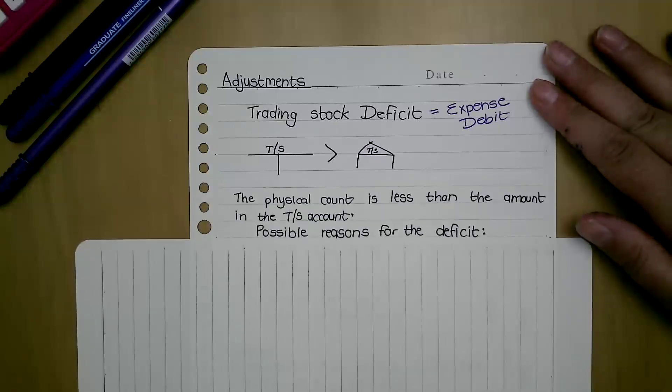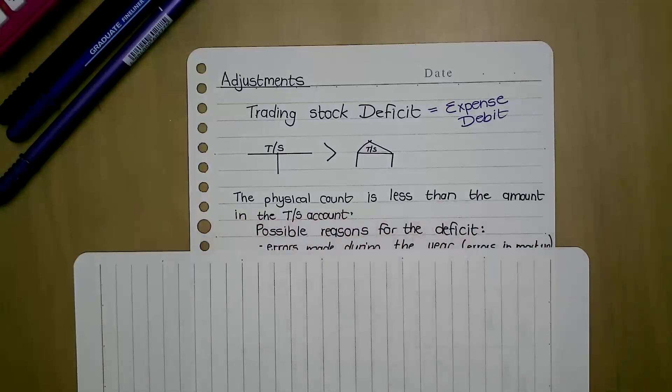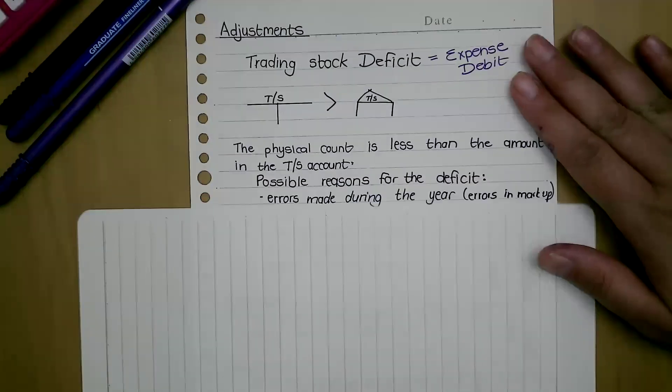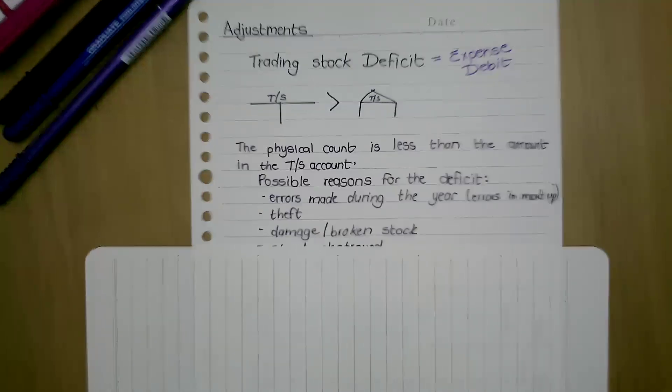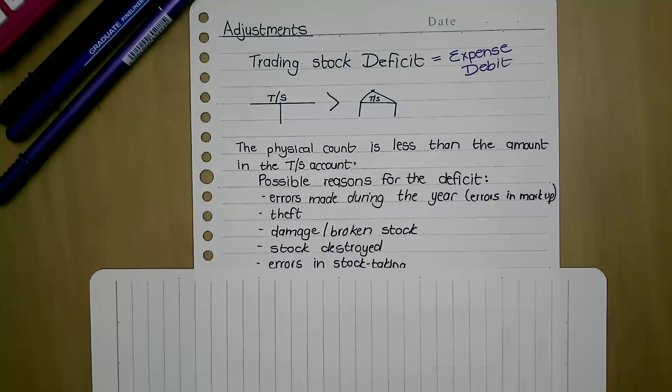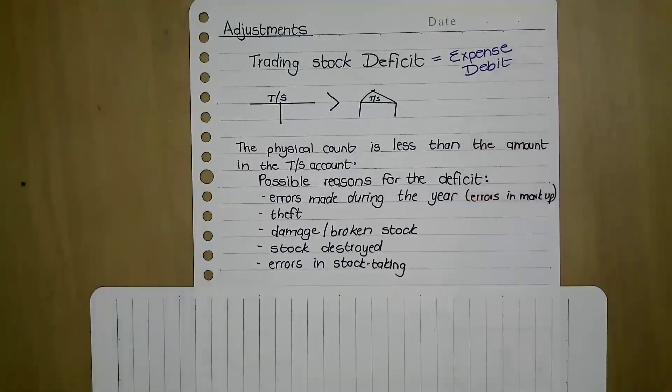Now, reasons that this deficit could occur: the physical count is less than the amount in the trading stock account. Reasons for a deficit include errors made during the year, for example, you record the incorrect markup when recording sales. Remember, if you record sales you also record cost of sales, which is the cost price of the goods that you sold, and the trading stock account is affected. Maybe theft, damage or broken stock, stock destroyed, or errors during stock taking.